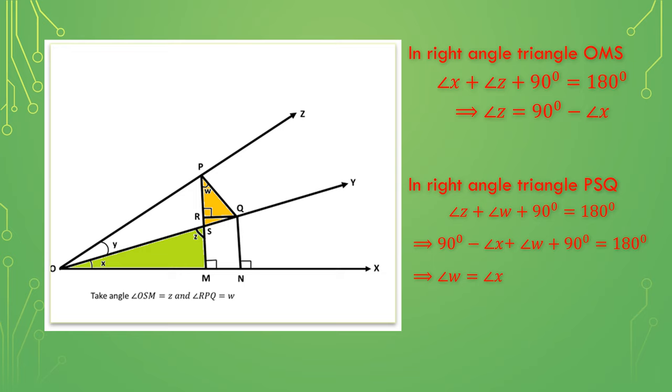In the same way, in right angle triangle PSQ, we can see that angle QSP is same as angle z. Therefore, angle z plus angle w plus 90 degrees equals 180 degrees. On simplifying, as we already got angle z equals 90 degrees minus angle x, substitute that, so we get 90 degrees minus angle x plus angle w plus 90 degrees equals 180 degrees, or angle w is same as angle x.